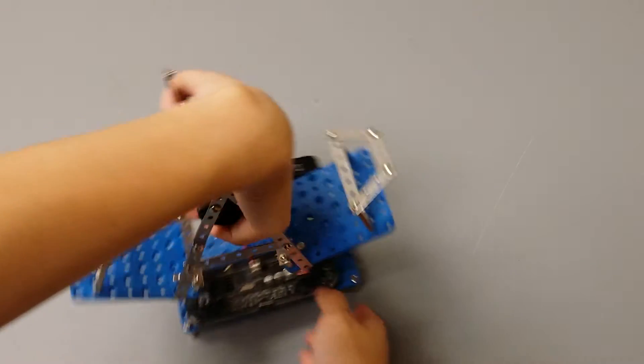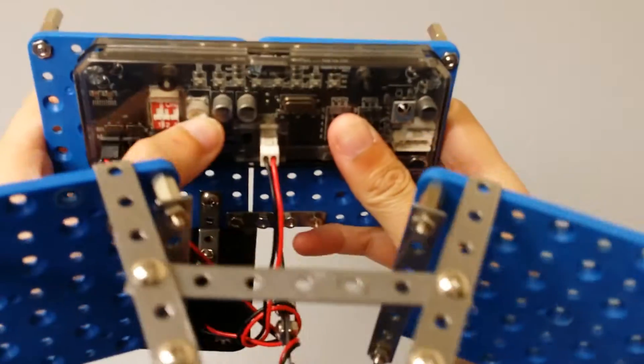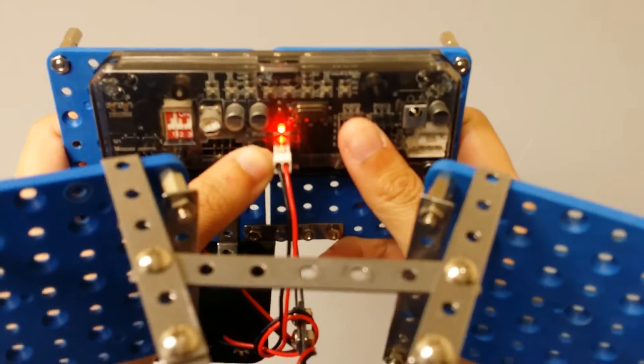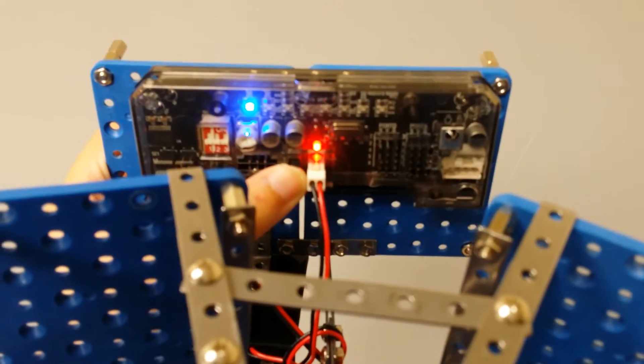To turn on your smart board, you need to flip the black switch on your board and make sure that the red LED light is turned on.